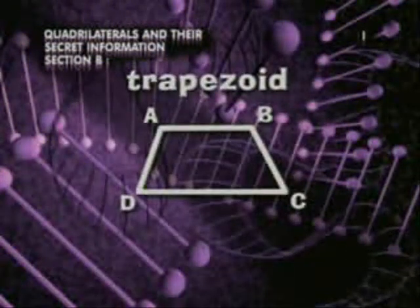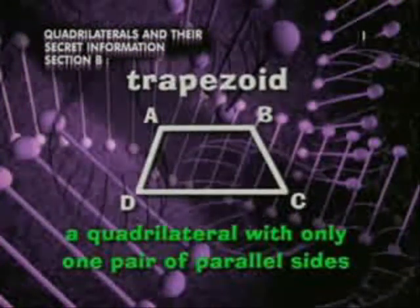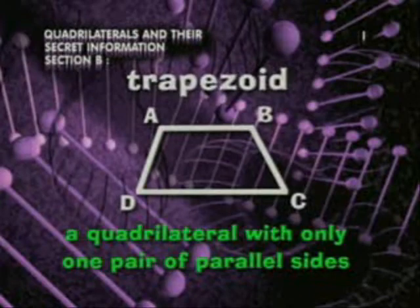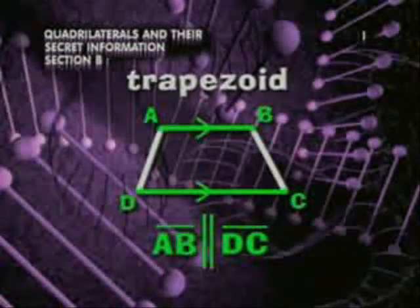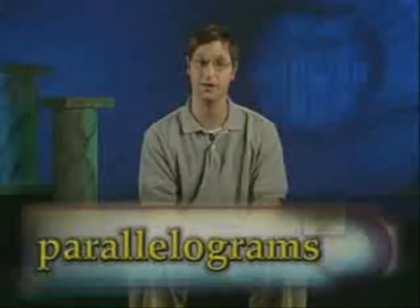There's one more shape. A trapezoid is a quadrilateral with only one pair of parallel sides. In this trapezoid, segments AB and DC are parallel.